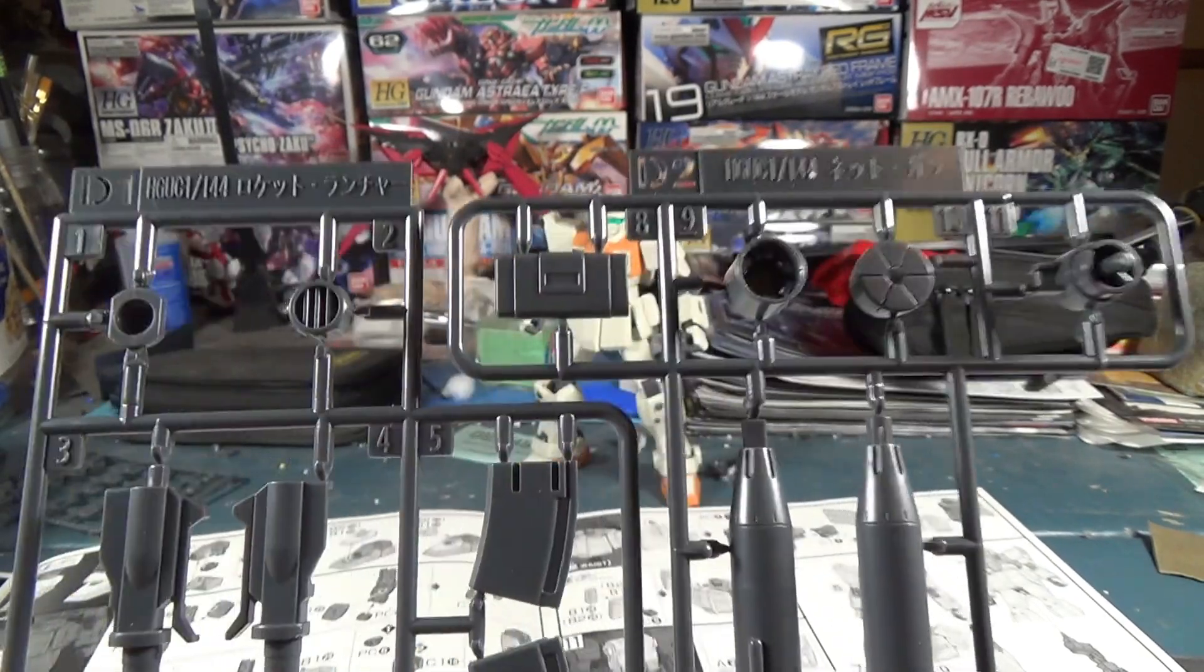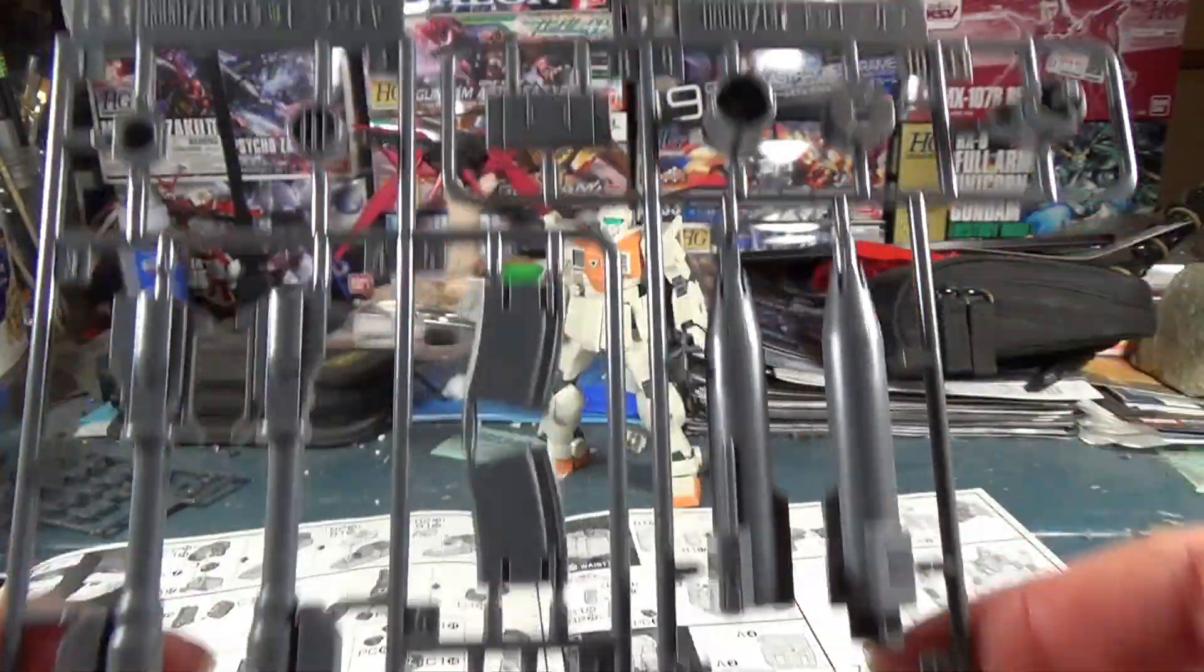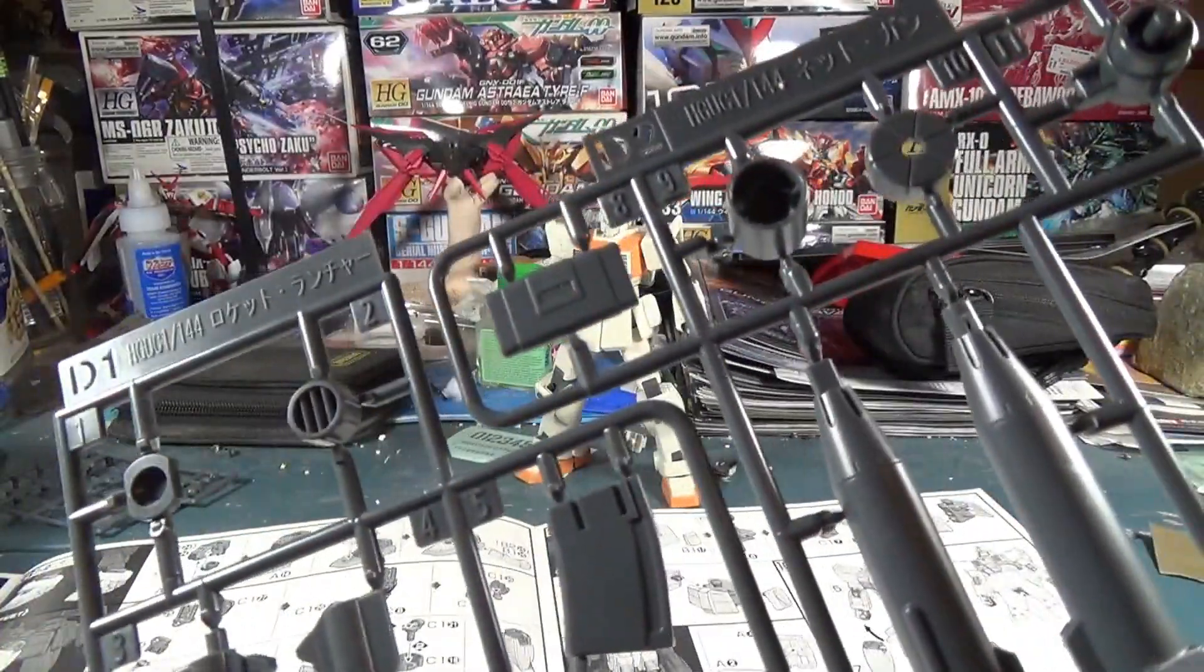So one thing that's super weird about this kit is, here you can see I'm holding up runners D1 and D2. But they're actually the same runner. D-run and D2 are one and the same. That is so weird.